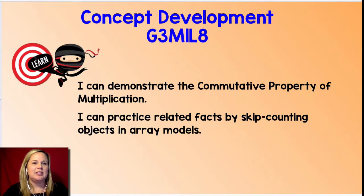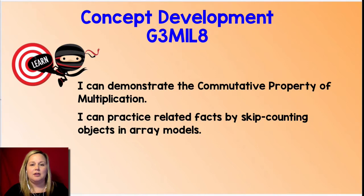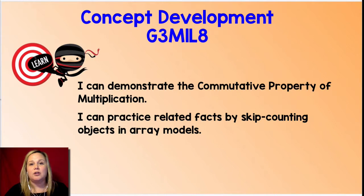Let's take a look at our learning goals for today. The first one is: I can demonstrate the commutative property of multiplication — that means I can use it and explain how I use it. The second one says: I can practice related facts by skip counting arrays and objects in an array model. Related facts are part of the commutative property — if I know that two times four equals eight, I know the related fact is four times two equals eight. It's just flipping those factors.